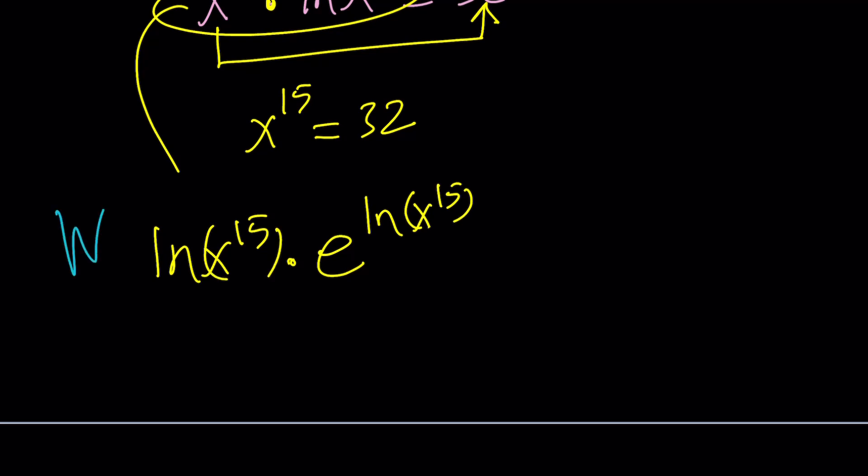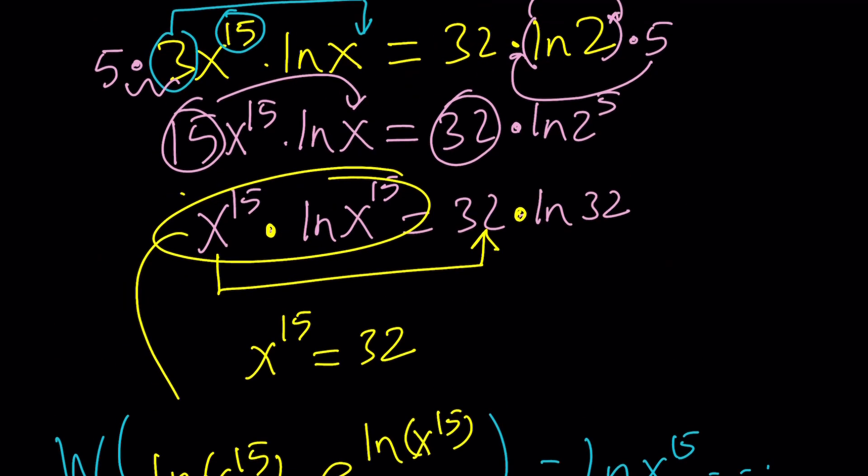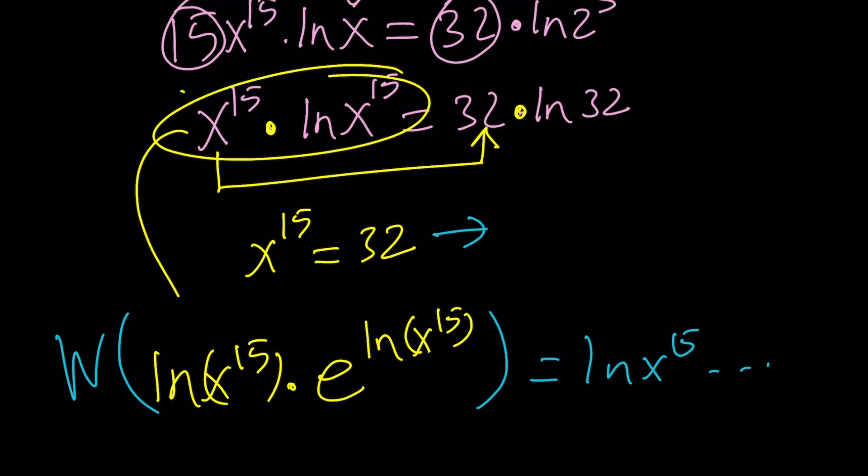And, then, you can go ahead and w both sides. And, if you w this, you're going to get lnx to the 15th, so on and so forth. And, the rest will fall. But, from here, we have an easy solution. x will be the cube root of 2 again because we got the same numbers.